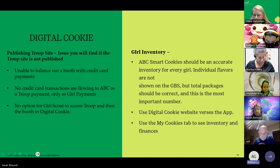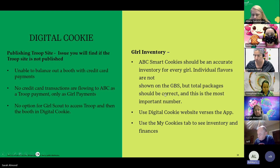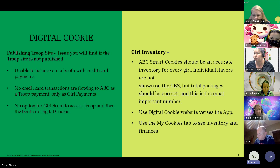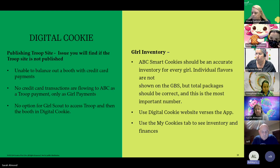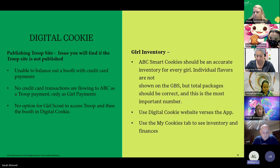For the Digital Cookie site, publishing your trip site — here are a few issues you'll find if your trip site hasn't been published. You'll be unable to balance out a booth with credit card payments, and we're going to walk you through why you're not able to balance out. Also, no credit card transactions are flowing to ABC as a trip payment — you only see it as girl payments. This is because the girl took the payment under her own personal account instead of under the trip site, possibly because you hadn't published your trip booth site yet.